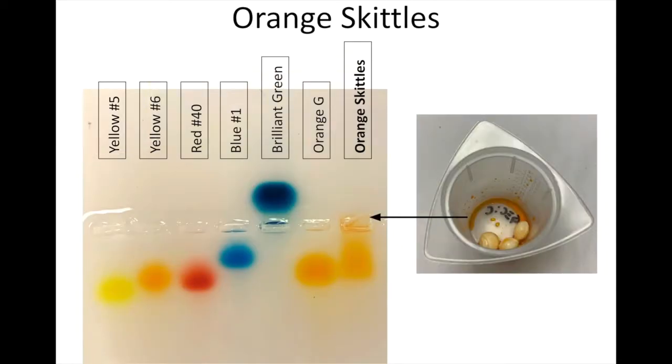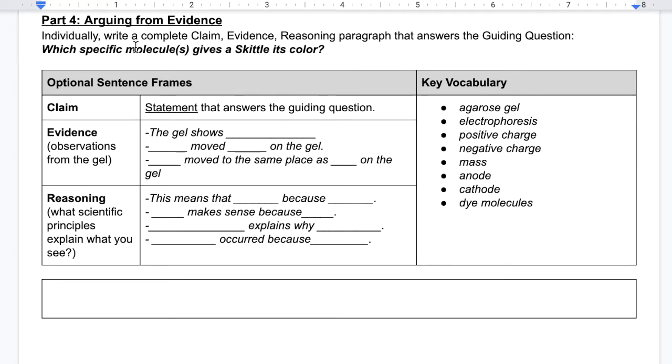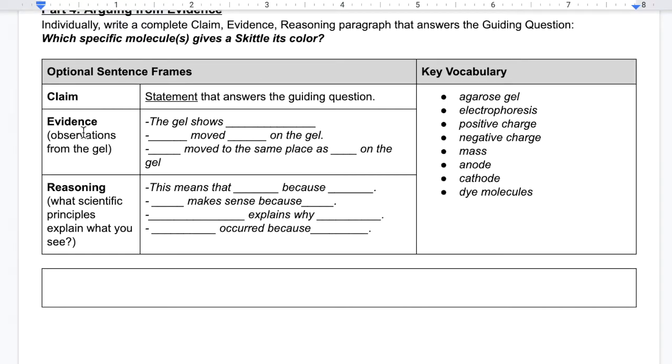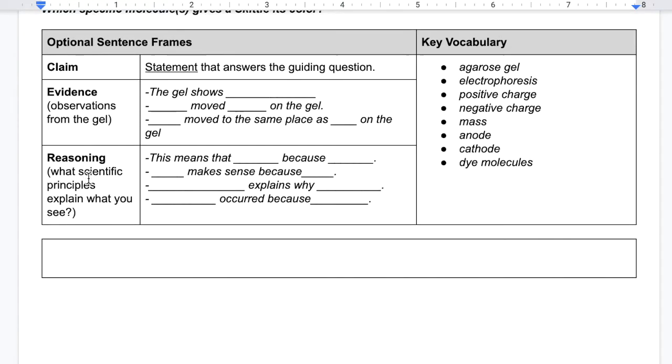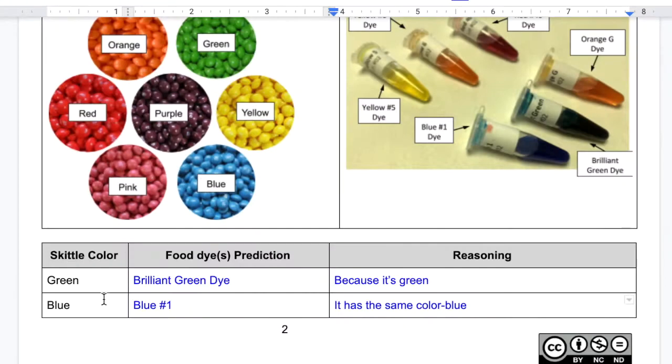Next, they'll review some sample agarose gel electrophoresis results and use their findings to write a claim and then provide evidence and reasoning for the molecule or molecules they believe gives the green Skittle and the Skittle they chose in their predictions, each of their colors.